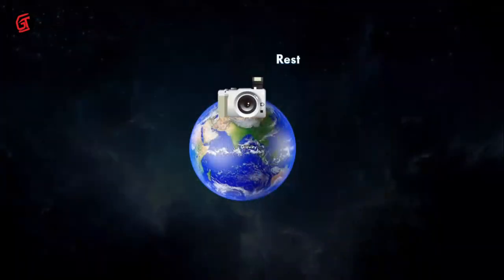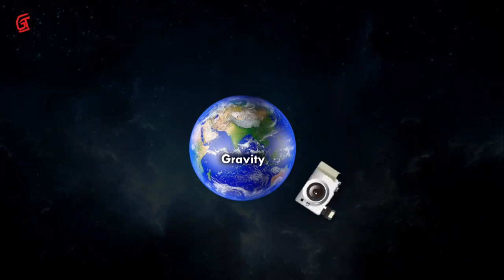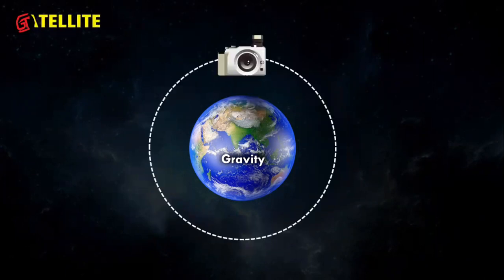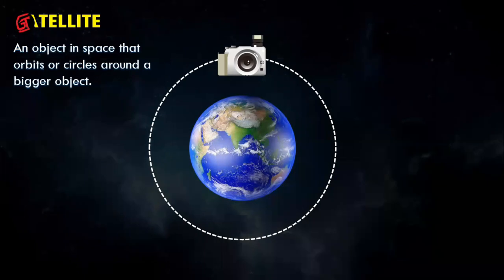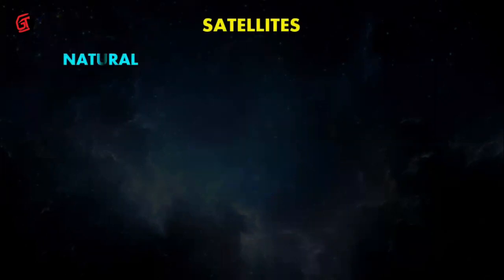Suppose we are at rest at a particular place in space. The center of the earth has gravity, so we are revolving around the earth. The moon is a satellite of the earth. Satellites revolve around the earth only because of gravity, and that's why satellites are placed outside the earth.